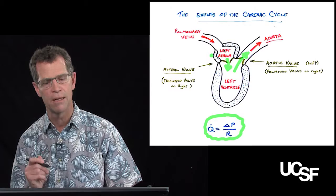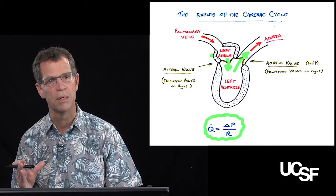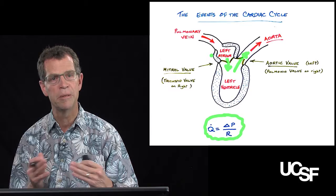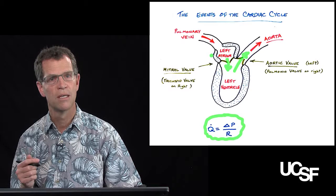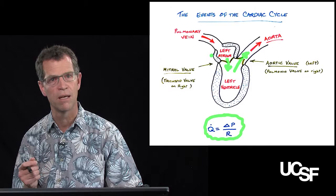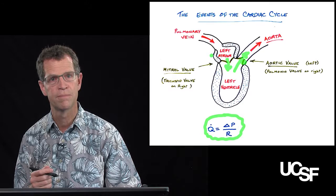The pressure gradients in the heart are quite low from atrium into ventricle, but the resistance of the valves is so low that a very small pressure gradient drives a lot of blood flow. Healthy heart valves have extremely low resistance when open and essentially infinite resistance when closed — completely open or completely closed, with no intermediate state. Diseased heart valves don't open well, resulting in high resistance, which means the ventricle must generate higher pressures to achieve normal blood flow out into the aorta.